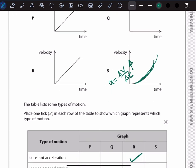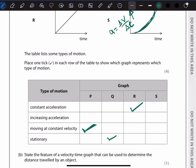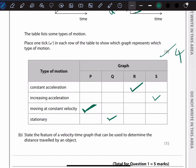So we tick increasing acceleration for graph S. Here is how our table looks after matching each graph with the correct type of motion. We get four marks. Now let's move on to part b of the question.